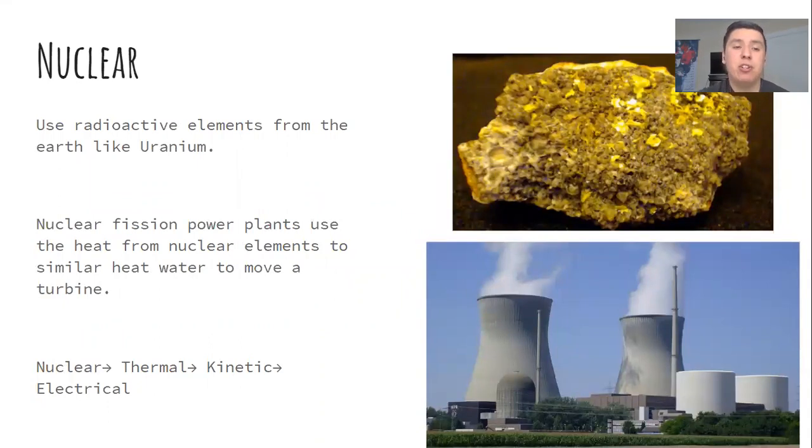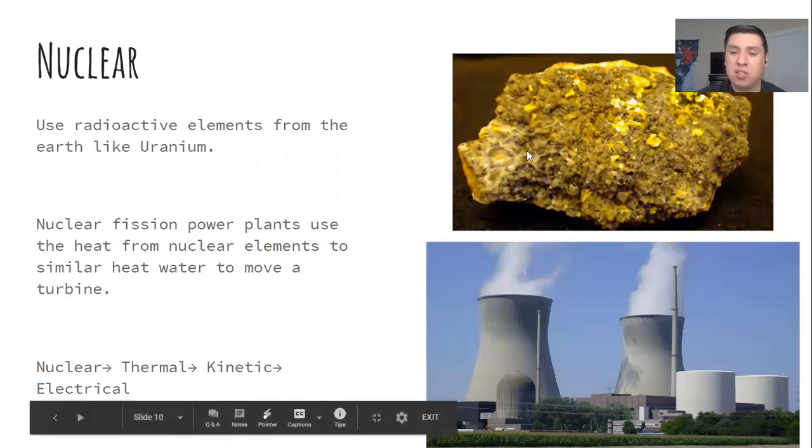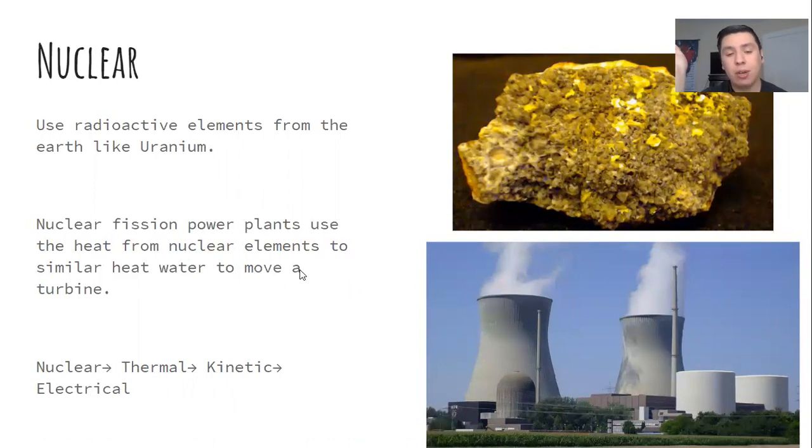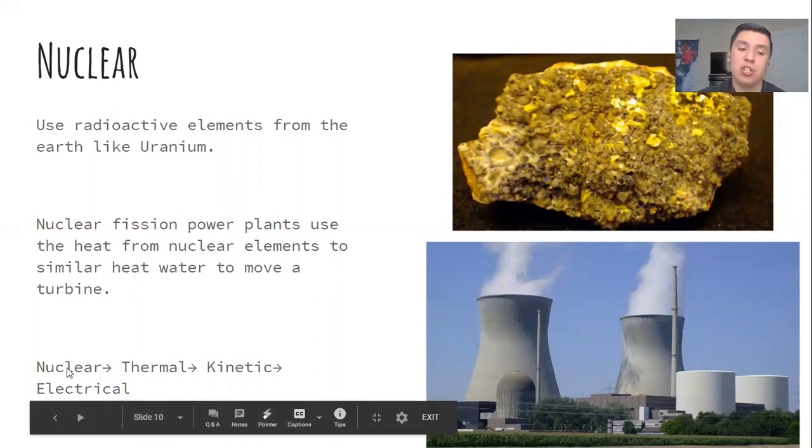Finally, there's nuclear energy. We use radioactive elements like uranium, which is shown here on the side. We put these radioactive elements in nuclear power plants for nuclear fission. I'll go over what the fission process is in the next unit, but basically, in this process, the elements produce a lot of heat. It's similar to the burning of oil and coal. The heat causes the water tank inside to make steam and then move a turbine. It goes from nuclear energy to thermal energy from heat, to kinetic energy, to electrical energy.